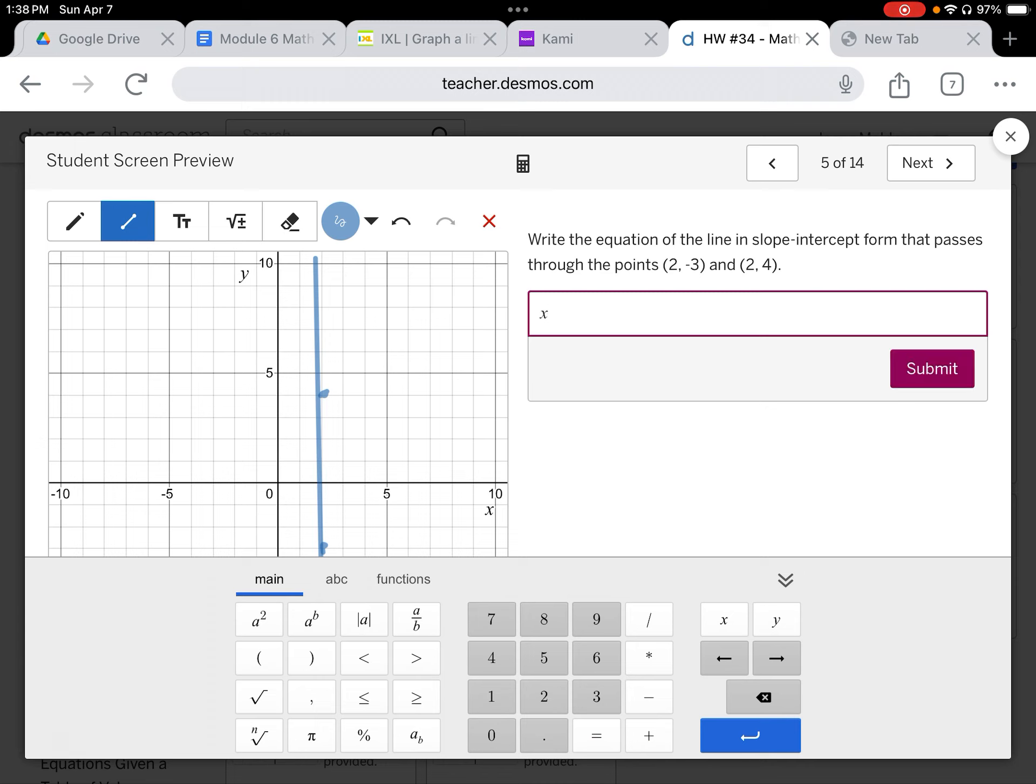And it is vertical, x equals, and the x value that these all have is two. And there's my graph. Press submit.